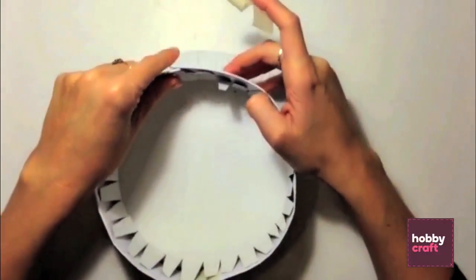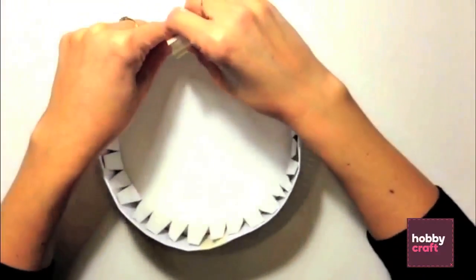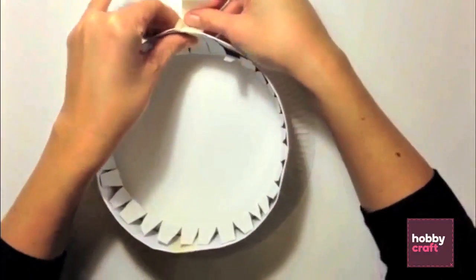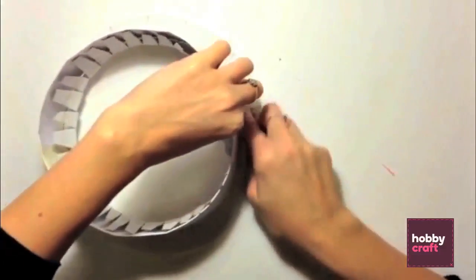Next, attach this middle section of the hat to the rim of the hat using masking tape. Masking tape the two ends together and then tape all the tabs on the inside to the middle section of the hat.